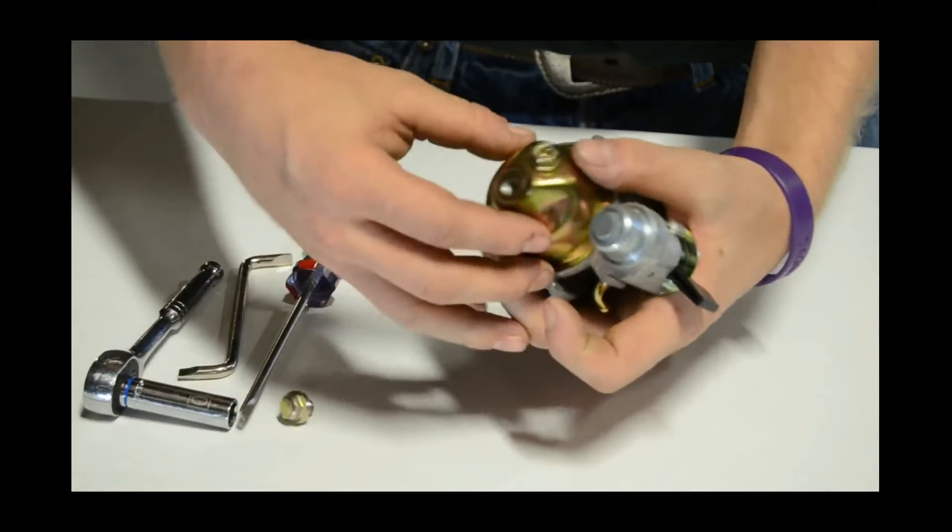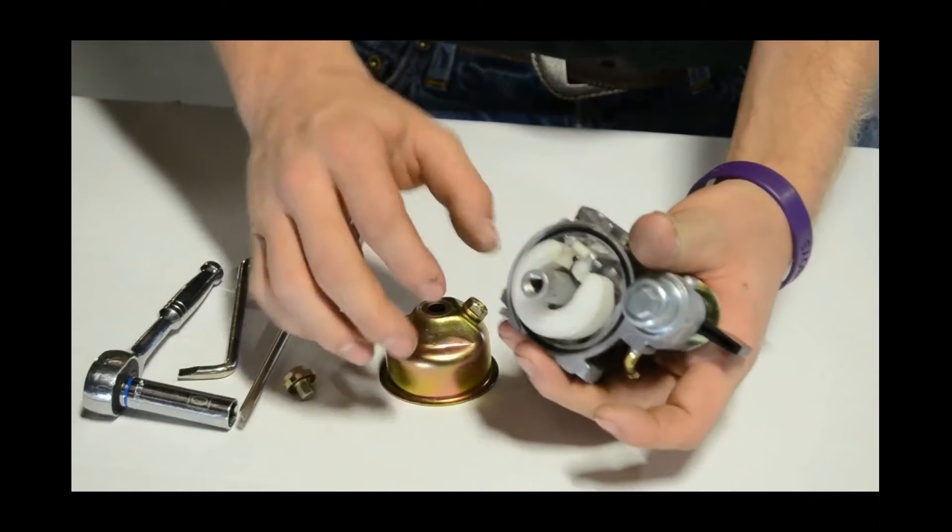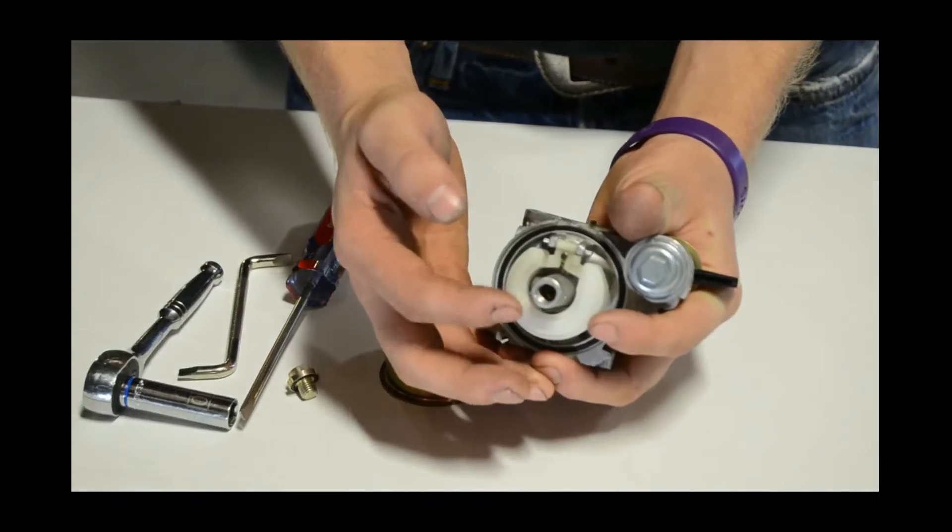There will be a gasket underneath the float bowl. Make sure that it doesn't fall out or become creased or cracked or anything along those lines.